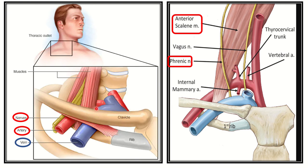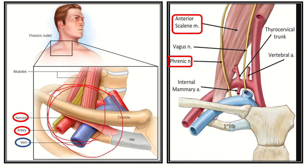In front of the anterior scalene there is a vein - the subclavian vein. These three structures and their relation to the two muscles is very important and will solve many questions, because a lot of questions in the MRCS exam arise from this topic. The vein lies outside the muscles while the artery and nerve lie between the two muscles.